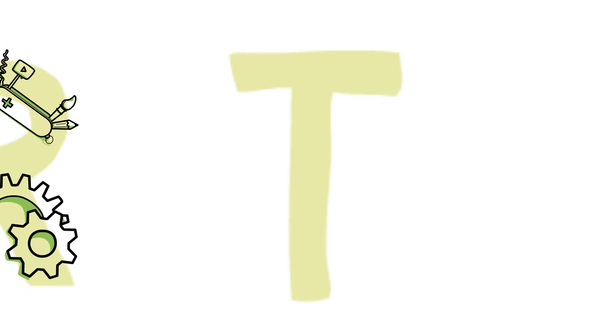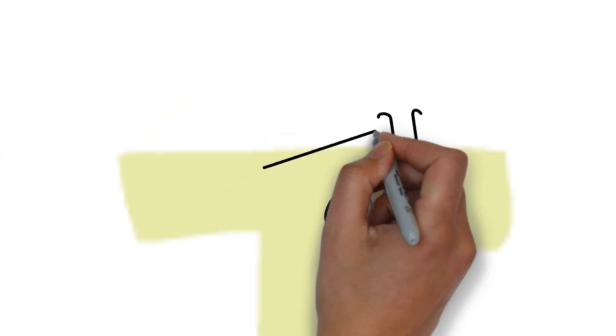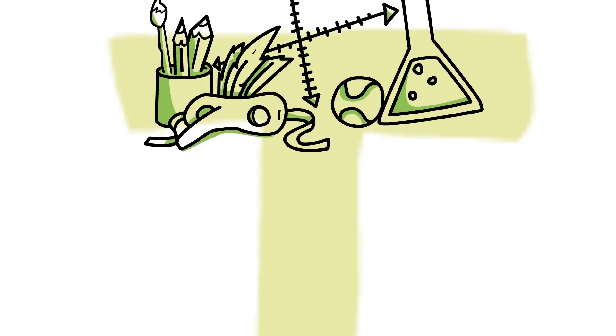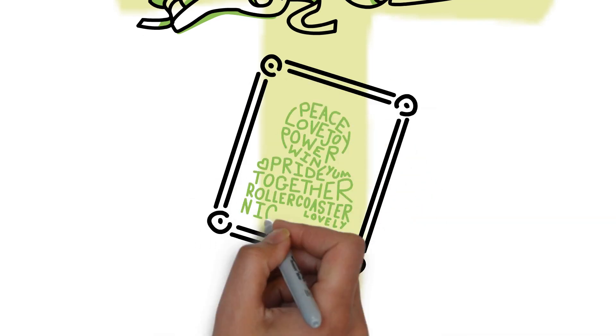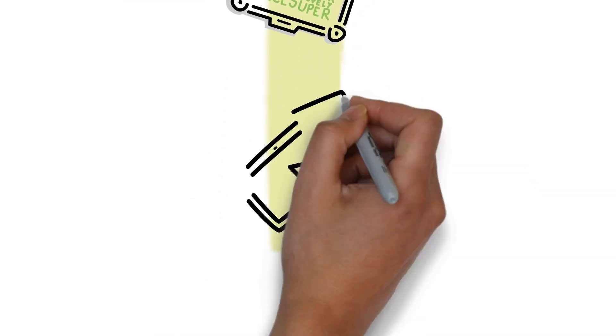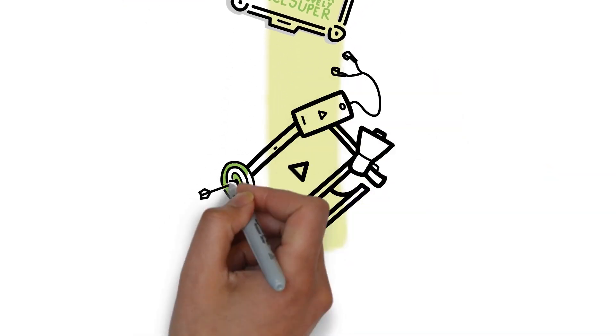Try changing the camera position to make your scribe more dynamic. You can also use camera elements like the ones we placed to change the position of the camera without drawing any new elements.